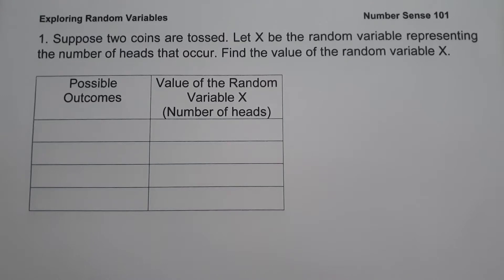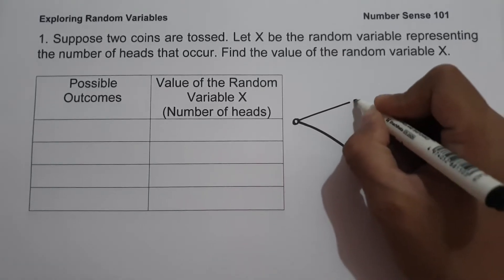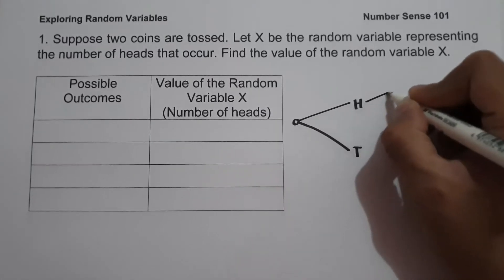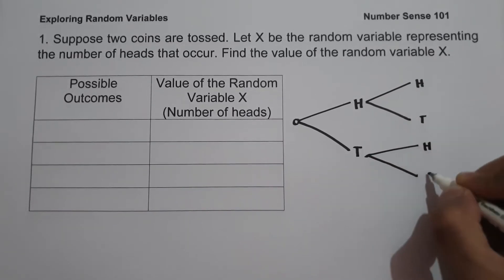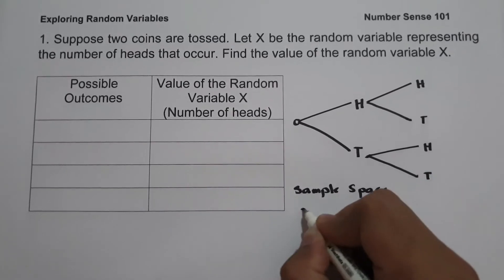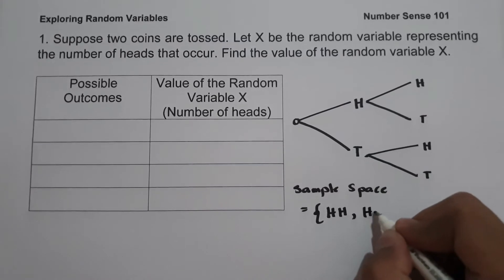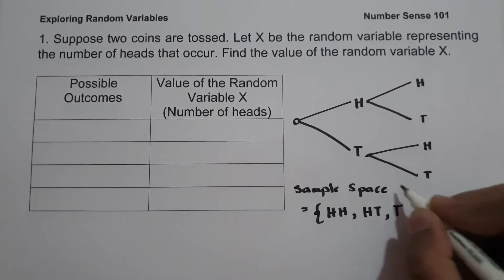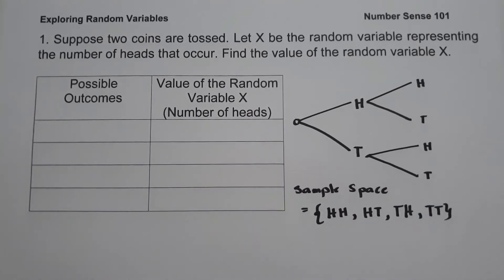Using a tree diagram, on the first toss we have two possible outcomes: head and tail. On the second toss, we also have head and tail. Using this diagram, we can easily identify all the sample space. So the sample space for this experiment is: head-head, head-tail, tail-head, and tail-tail.